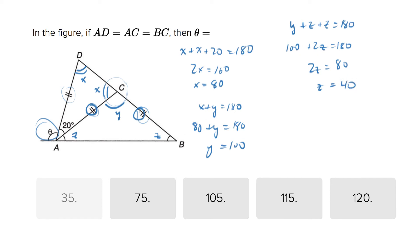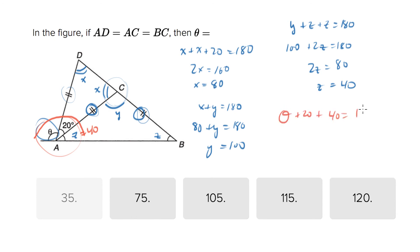So let's put everything on the chart that we need. Z equals 40. We know that theta, here, is another angles-across-a-line situation, so this whole arc must equal 180. You can figure that out by saying theta plus 20 plus 40 equals 180, so theta must equal 120.